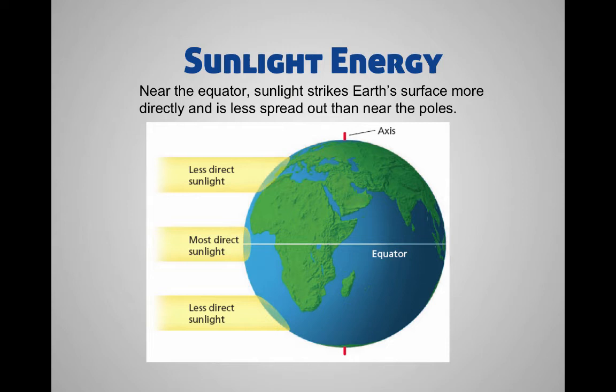Now we need to talk about seasons. When we talk about seasons, you think: this season it's hot, and this season it's cold. Why does it get hot or cold during different seasons? A lot of people think it's the distance that the sun is from the Earth — it's not so much that. It is the energy that we get from the sun, and whether it's striking us more directly or more indirectly.